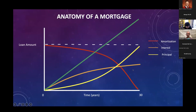One thing to keep in mind is there is a total cost, shown as the green line. If you add up the interest and your principal, they add up to this green line. As time goes on, the total cost — that's the principal plus the interest on that home — is a lot higher than that initial purchase price for the home.